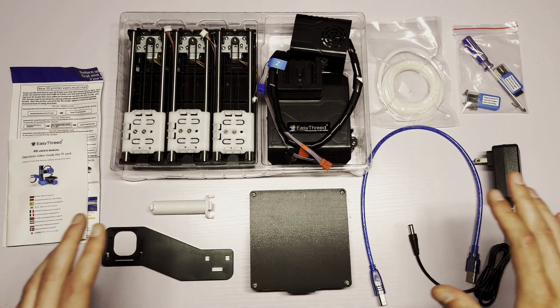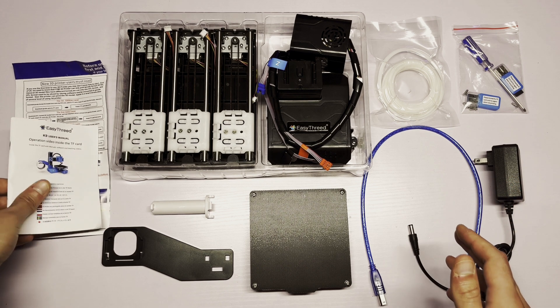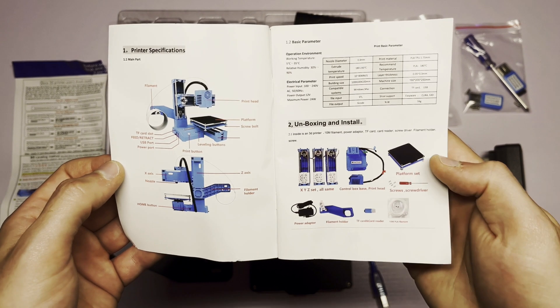I've got everything laid out here. So this is everything that was in the box minus the packaging. If we look at the user manual, it does go through what each of these items are.